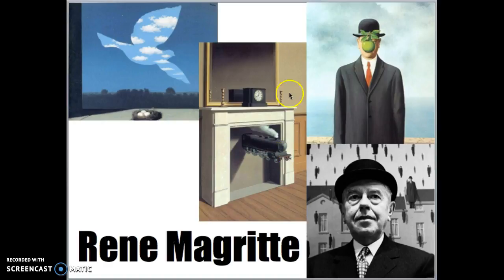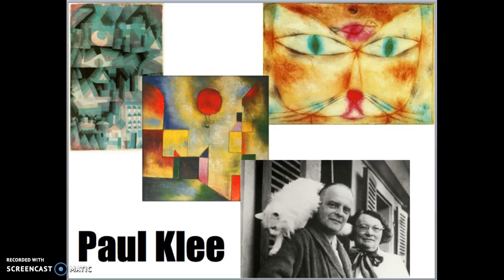We first started with René Magritte — he was the surrealist and all of you drew an apple. Then we had Paul Klee. It looks like 'Klee,' but it's 'Klee.' He was the one that we read the story about with the cat and the bird in his memory.